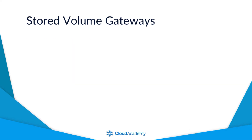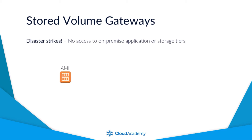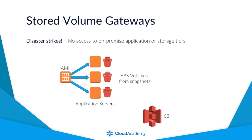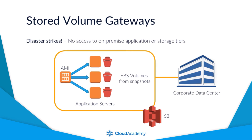Gateway stored volumes makes recovering from a disaster very simple. For example, consider the scenario where you lost your local application and storage layers on-premise. Providing you had provisioned for such a situation, you may have AMI templates that mimic your application tier, which you could provision as EC2 instances within AWS. You could then attach EBS volumes to these instances, created from your storage gateway volume snapshots stored on S3, giving you access to your production data. Your application and storage infrastructure could potentially be up and running again in a matter of minutes within a VPC with connectivity from your on-premise data center.